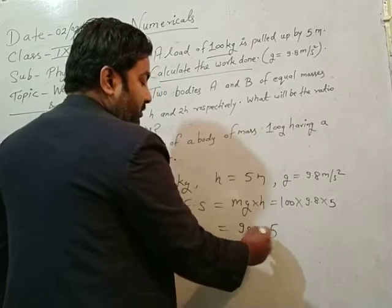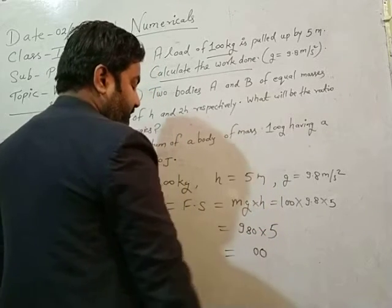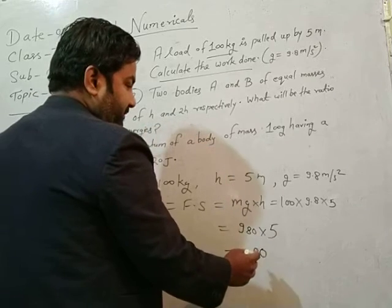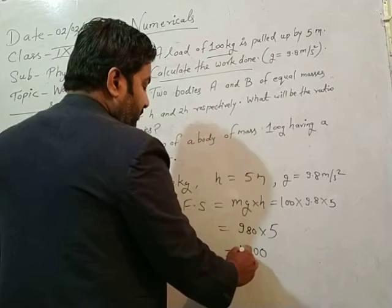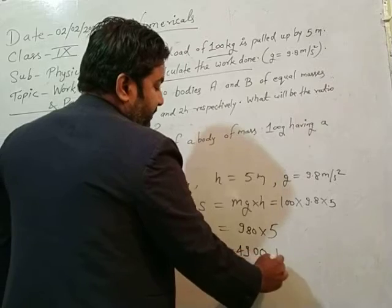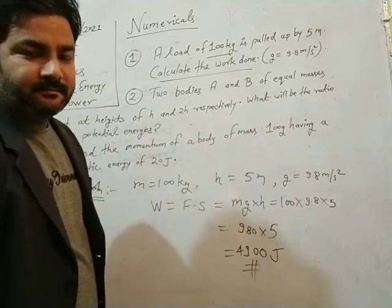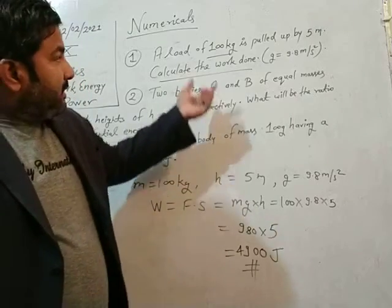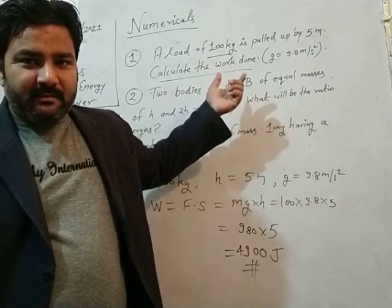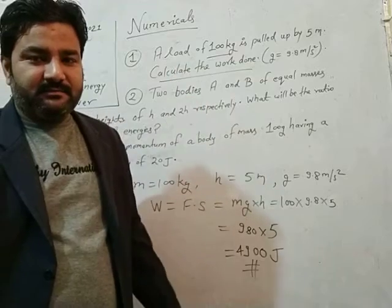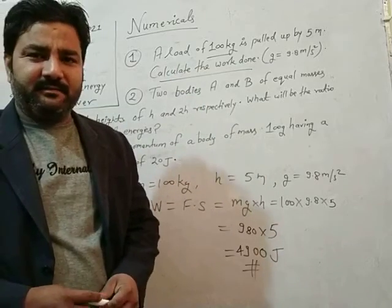This is equal to 4900 joules. This is the work done in pulling the body up to 5 meter with mass 100 kg. Clear? Very simple concept. You have to just remember the formula, then everything will be easy.